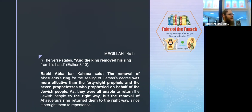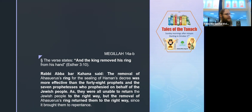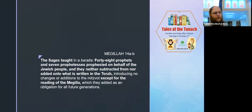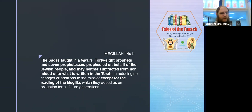The real reason we're quoting that is to talk about prophets. The Talmud says there were 48 prophets and seven prophetesses. The Gemara does discuss exactly who they were, but the question is: how many prophets were there actually? The Sages taught in a Braita: 48 prophets and seven prophetesses prophesied on behalf of the Jewish people. They neither subtracted from nor added to what is written in the Torah - no change in mitzvot - except for the reading of the Megillah, which they added as an obligation for future generations.